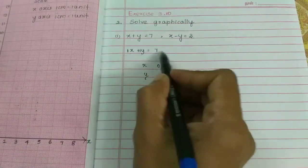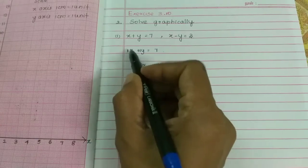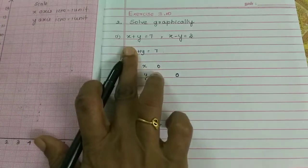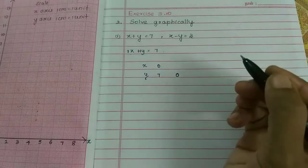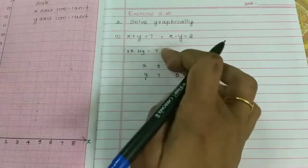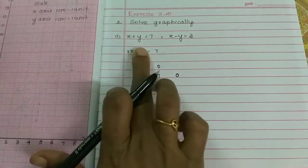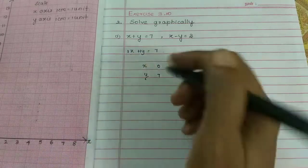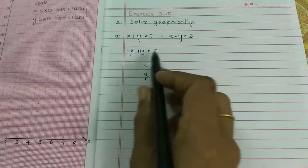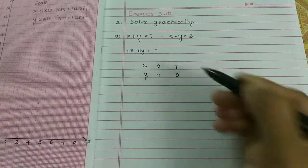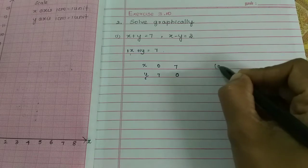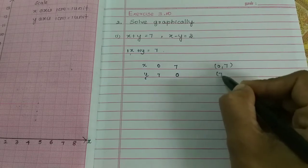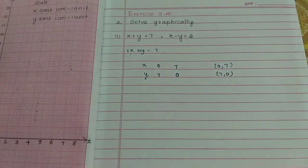If you put the x value to 0, the value becomes 0, then y equal to 7. So we put 7. For this equation, if the y value is 0, then x equal to 7. So we have the points: (0, 7) and (7, 0). Now we have to plot these.